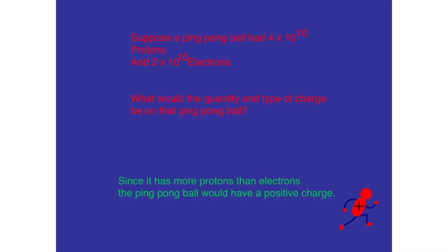Let's try this. Suppose we had a ping pong ball and we removed some electrons, so we had left 4 times 10 to the 10th protons but only 2 times 10 to the 10th electrons. What kind of charge would we have and how much charge? First of all, since we had removed the electrons and we have more protons than electrons, we have a positive charge.